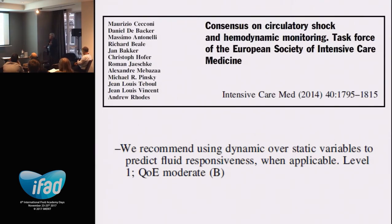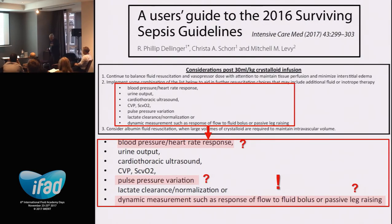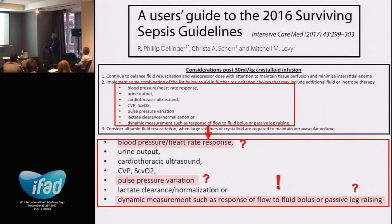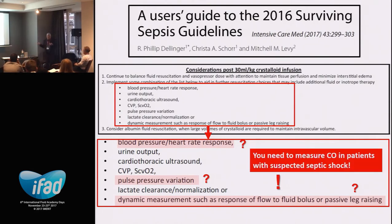The recommendation to use dynamic over static variables was accepted by the consensus on circulatory shock of the European Society of Intensive Care Medicine. In the new Surviving Sepsis Campaign Guidelines, dynamic parameters were introduced for the first time — pulse pressure variation, response to a fluid bolus, and passive leg raising. My strong belief is that every patient with suspected septic shock needs cardiac output measurement, both for assessment of fluid responsiveness and to evaluate the results of the various therapies we administer.